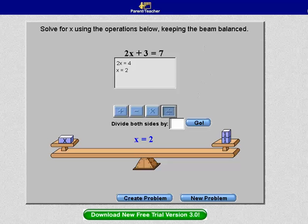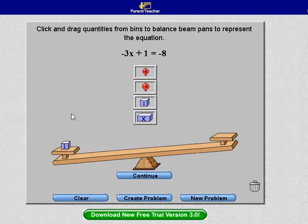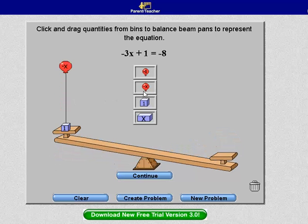Now I'd like to do another example. In this example, on the left-hand side, we have negative 3x plus 1. So if I put the 1 there, it pushes it down. But then when I put the negative x's, x's weight it down, and negative x's are like helium-filled balloons that pull it up.